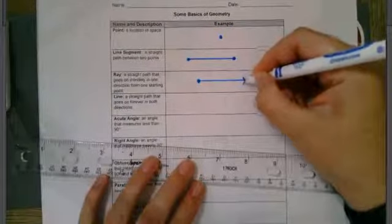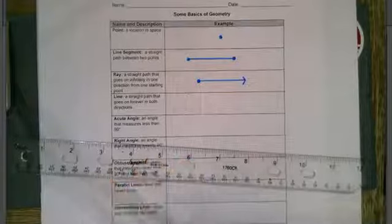Ray. A straight path that goes on infinitely in one direction from one starting point. So here's my starting point. And it's a straight path. So I'm going to use my straight edge. And it goes on forever. So I'm just going to use an arrow there.